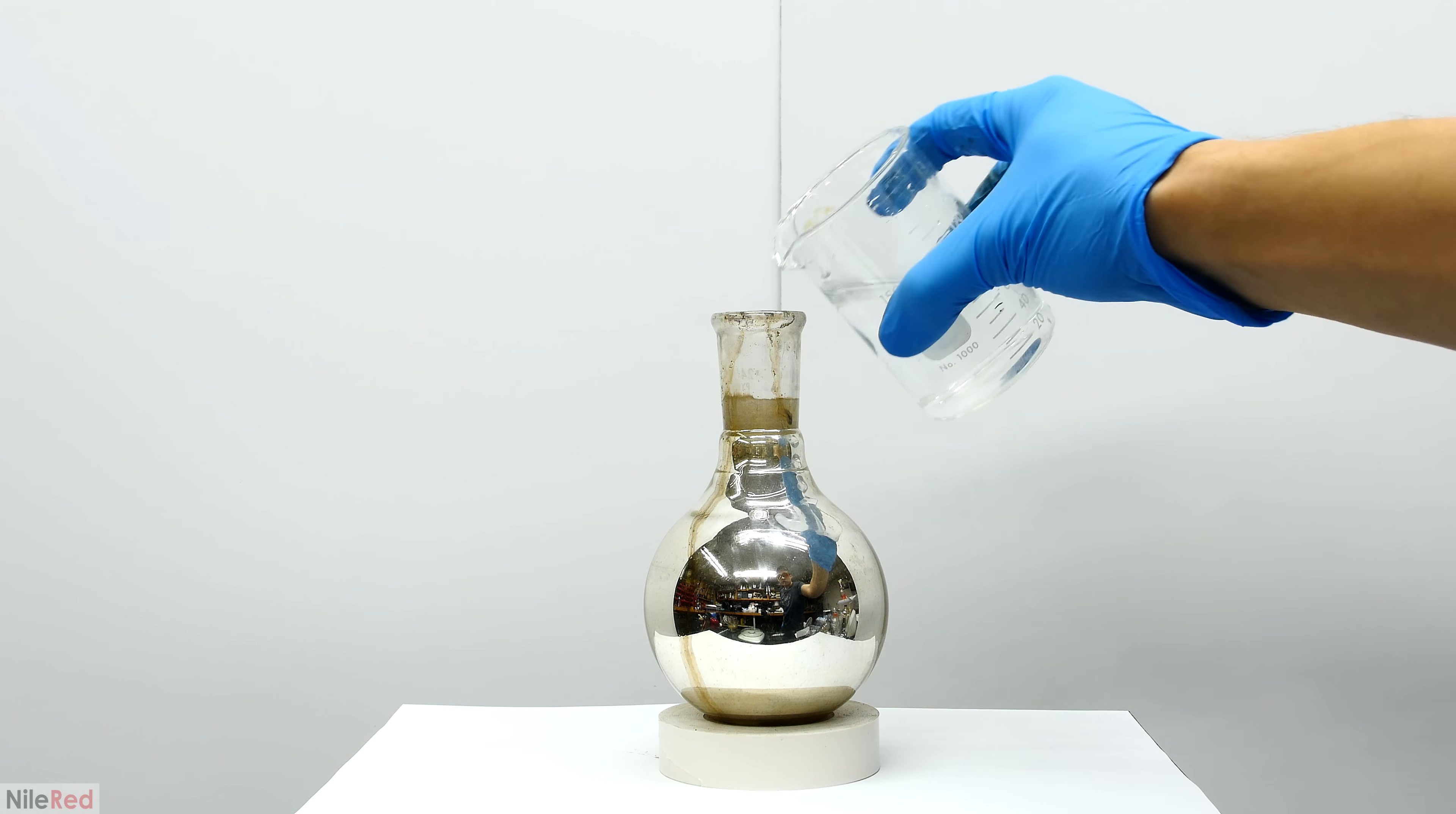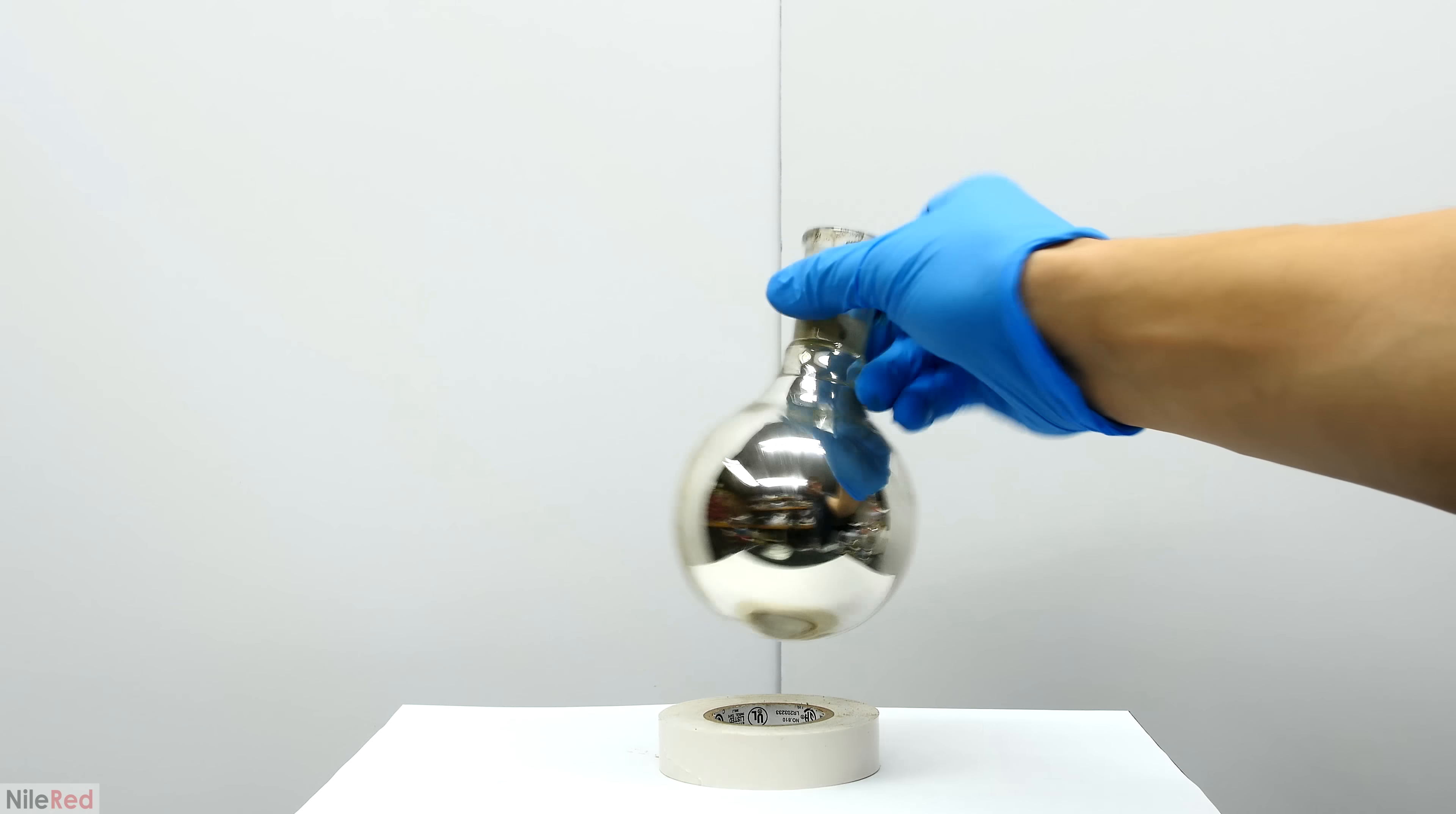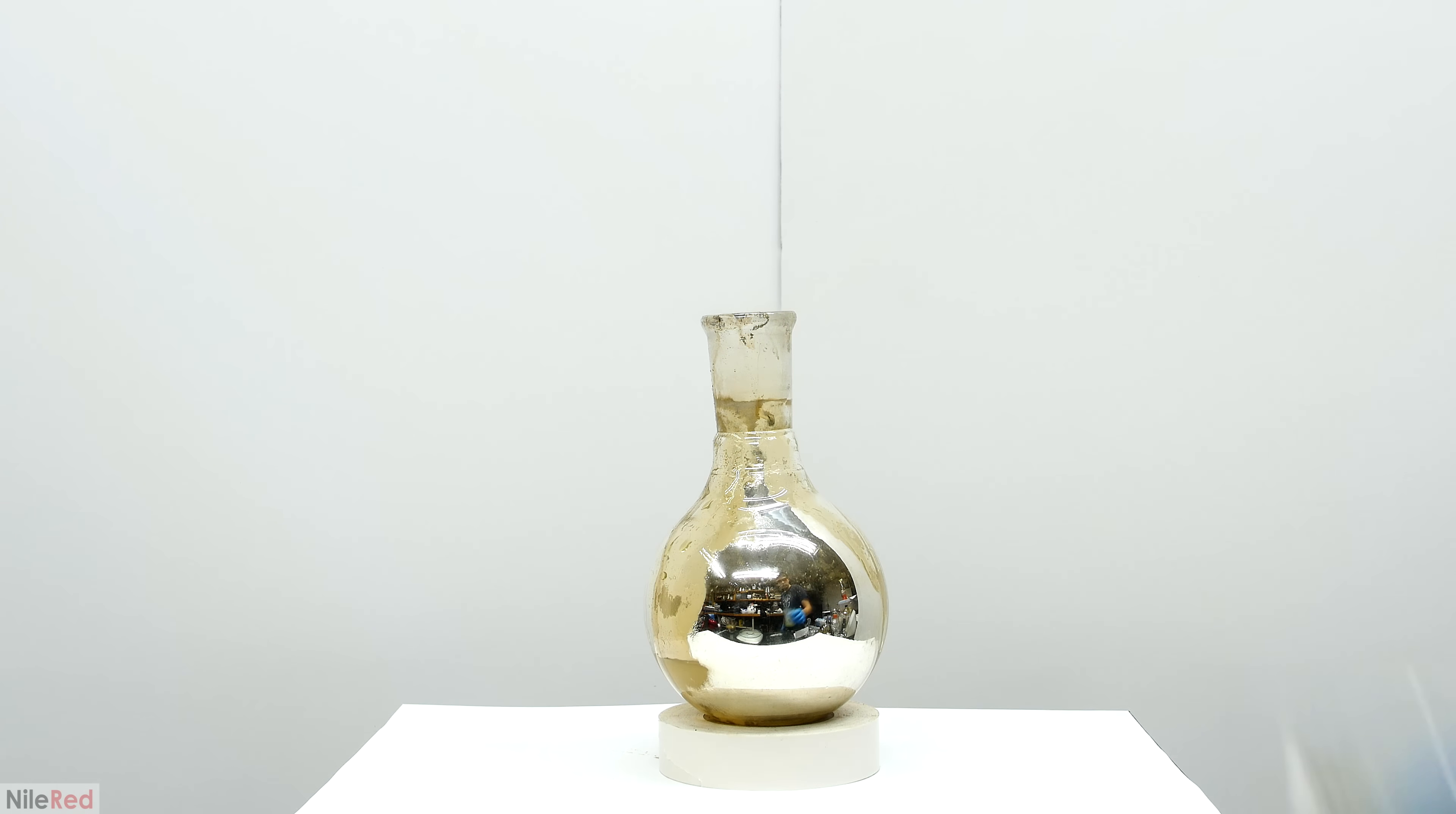Now there's the option where you can either keep the silver mirror or clean the flask. If the flask is washed and capped, the mirror should remain untarnished for a decent amount of time. I wanted to keep my flask though, so I quickly cleaned it with some concentrated nitric acid. The nitric acid reacts with the silver to form silver nitrate, which dissolves into the water.